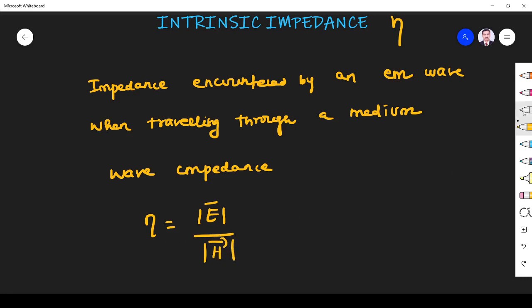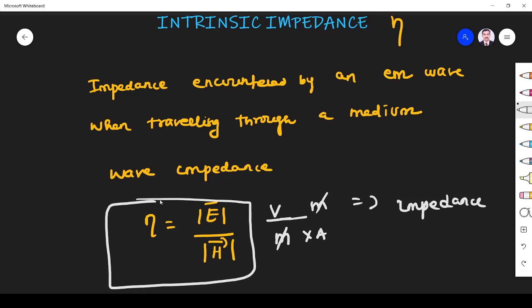How has it become impedance? The unit of electric field is volt per meter. The unit of magnetic field is ampere per meter. So meter cancels out, giving us volt by ampere, which is nothing but resistance or impedance. So intrinsic impedance is given by the ratio of magnitude of electric field to the magnitude of magnetic field. This we can derive from Maxwell's equations also.